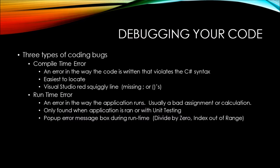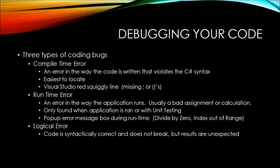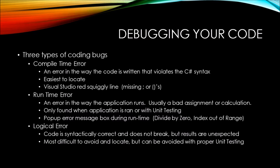The third type of coding bug is a logical error. A logical error is code that is syntactically correct and does not break the application, but the results are unexpected. Logical errors are the most difficult to avoid and locate, but they can be avoided with proper unit testing. The biggest problem with logical errors is that there are no warning messages — there's just simply bad results.